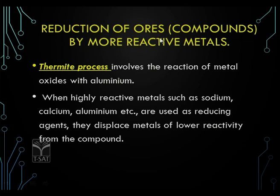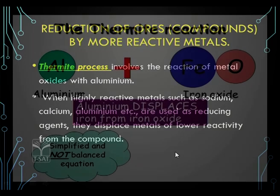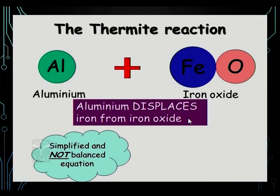Let us see what is reduction of ores by more reactive metals. This is called the thermite process. The thermite process involves the reaction of metal oxides with aluminium. When highly reactive metals such as sodium, calcium, and aluminium are used as reducing agents, they displace metals of lower reactivity. More reactive aluminium takes the place of less reactive iron from iron oxide — this is a displacement reaction.